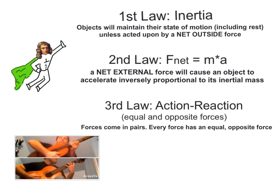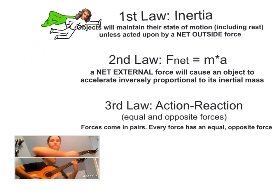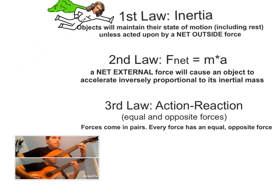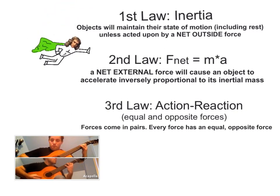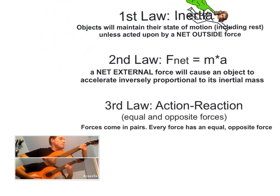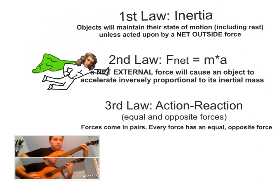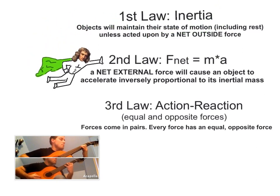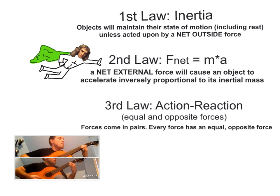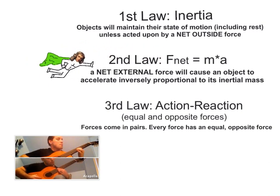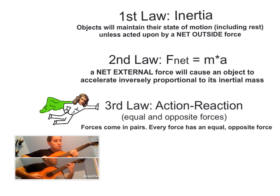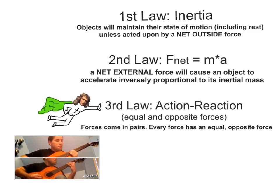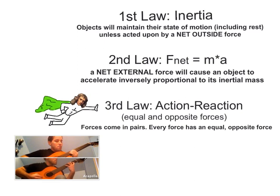Let's recap these laws. Isaac Newton's first law is the law of inertia, which says that objects will maintain their state of motion unless acted upon by an outside external force. The second law tells you how those forces cause the object to accelerate: F net equals MA. Lastly, the third law: every force has an equal and opposite reaction force. Forces always come in pairs — you never find them by themselves.